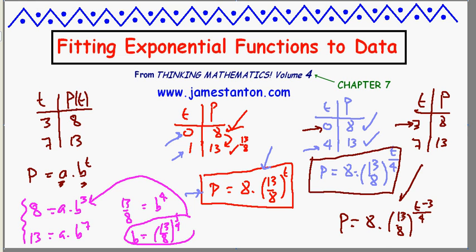Just check. Put in t equals 3. I'm getting 8 times 13 eighths to the 0. Yep, 8 again. And put t equals 7. 7 minus 3 is 4, over 4 is 1. So I'm getting 8 times 13 eighths to the 1. I'm getting 13 again. So there it is.